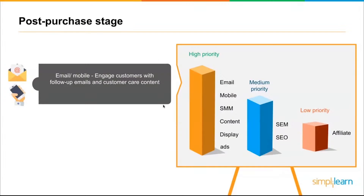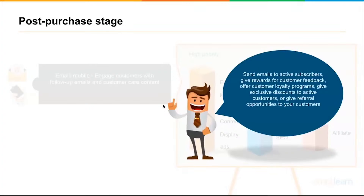With mobile, if you have someone's mobile number, text them — a simple thank you goes a long way. You can include a link to a survey in the text message. Send emails to active subscribers and give rewards for customer feedback — give them an extra 10% off for providing a review. Reward loyalty: if you're giving someone discounts and you have a good product, they'll recognize it and purchase again. On the affiliate network, give referral opportunities — if it's an email with a 'forward to a friend, get 10% off', that incentivizes people to help you sell.